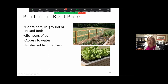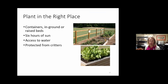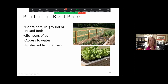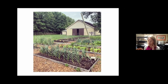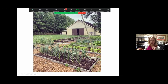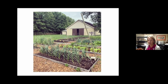When planting in the right place, you want to pick a good site. You can plant in a container, in the ground, or in raised beds. You want at least six to eight hours of sun per day, good access to water, and protection from wildlife like deer and rabbits. This is my garden at home — I have raised beds and an in-ground garden where we grow corn, watermelon, and things that spread out. We found that the raised beds, which we've added more of over the years, are easier to keep weeded, especially with two small kids and limited time.